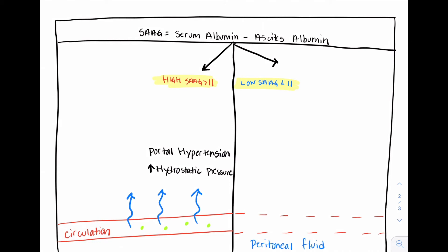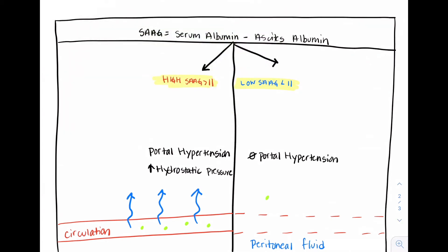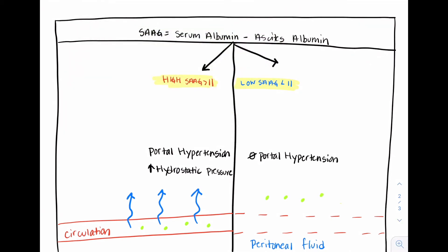In patients who develop ascites in the absence of portal hypertension, the albumin in the ascitic fluid is increased due to increased permeability in the capillary membrane. This means the difference between the albumin in the ascitic fluid and the albumin in the serum will instead be decreased.